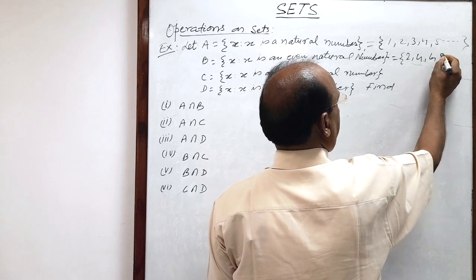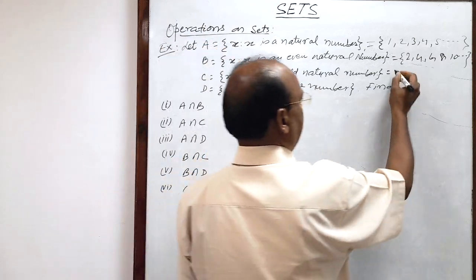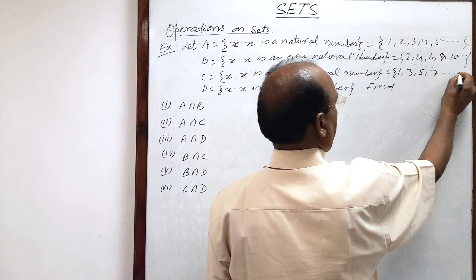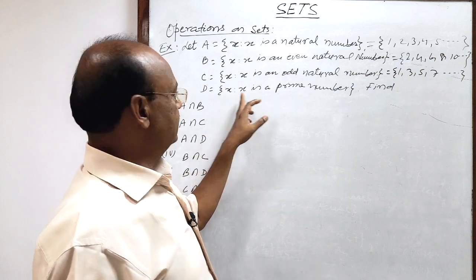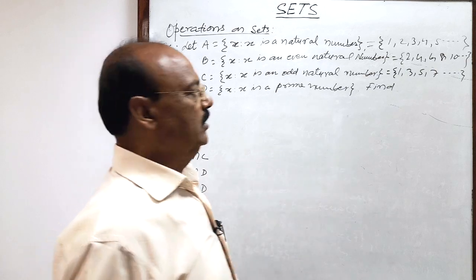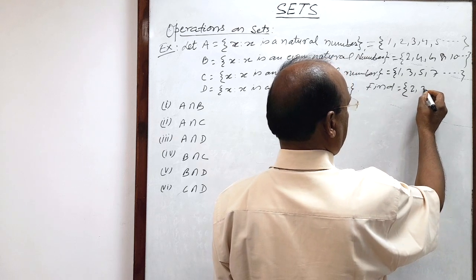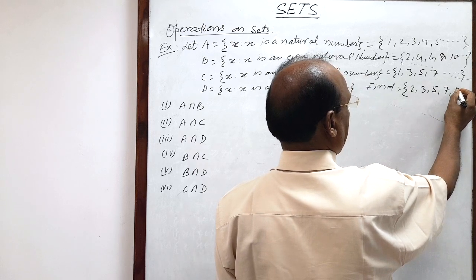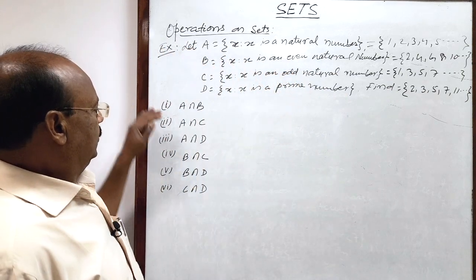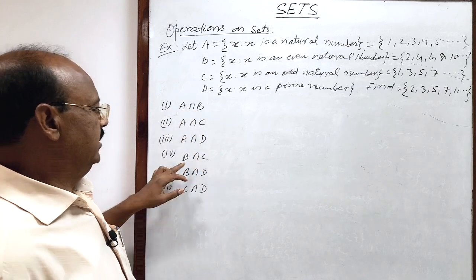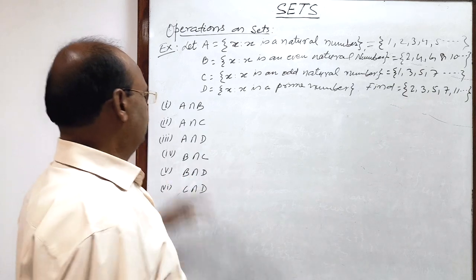Set B consists of elements 2, 4, 6, 8, 10 and so on. Set C has elements x such that x is an odd natural number, so elements are 1, 3, 5, 7 and so on. Set D has elements x such that x is a prime number, so this set will be 2, 3, 5, 7, 11 and so on. We have to find A∩B, A∩C, A∩D, B∩C, B∩D, and C∩D. Let us do these one by one.